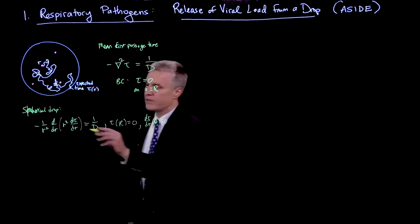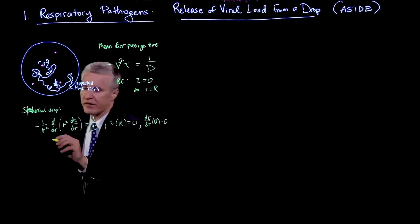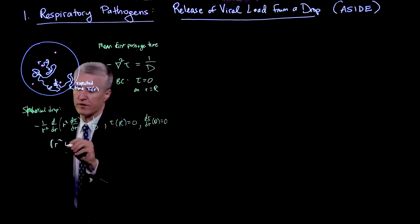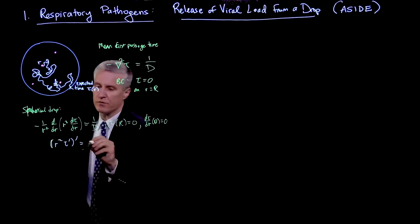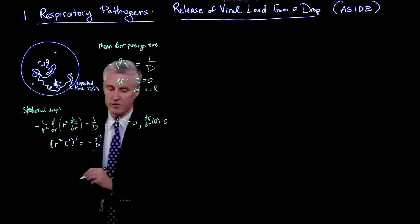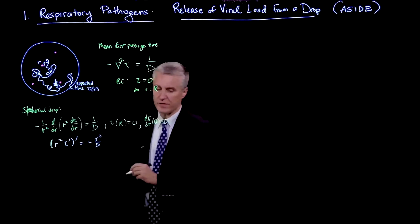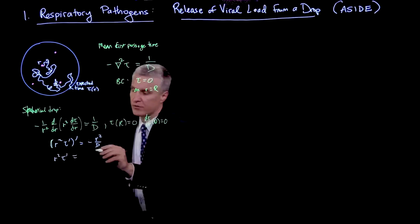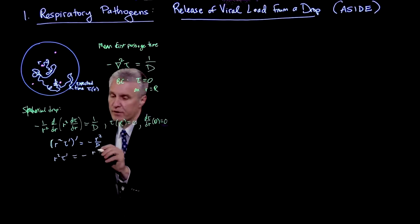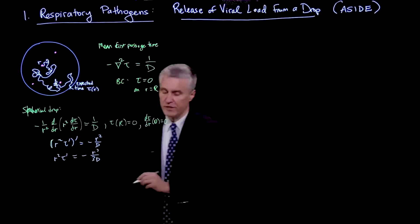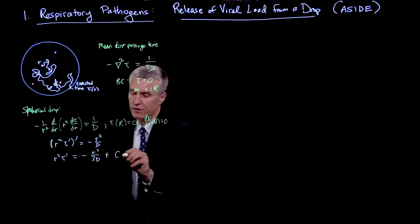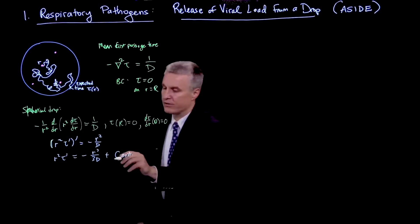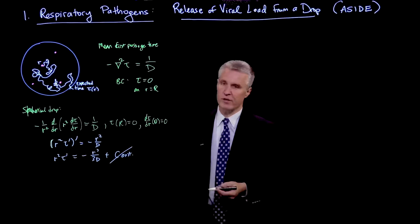OK, so we can now go ahead and solve this problem. Let me put the r squared on the other side and use primes to denote derivatives. So let's write this as r squared tau prime prime equals minus r squared over d. And if I now integrate both sides, I get r squared tau prime equals minus r cubed over 3d plus a constant.